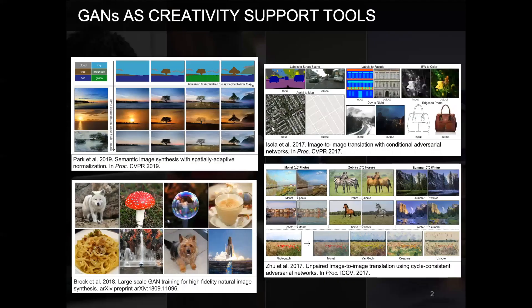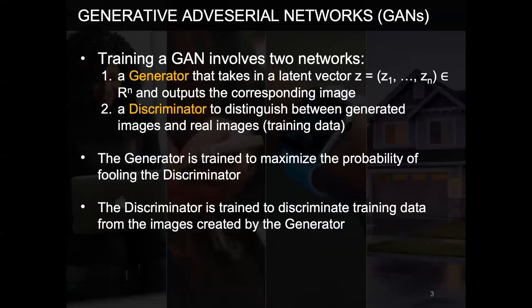Recently, GANs have shown promise as a creativity support tool and have been used to create all kinds of interesting images. Training a GAN involves two networks: a generator and a discriminator. The generator takes in a latent vector Z and outputs the corresponding image. During training, the generator tries to fool the discriminator, while the discriminator is trained to distinguish between generated images and real images until it can no longer tell the difference.